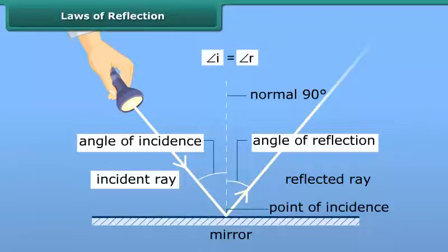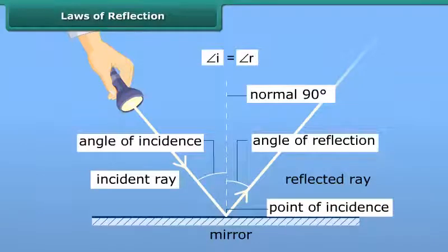The incident ray, the normal at the point of incidence and the reflected ray all lie in the same plane.